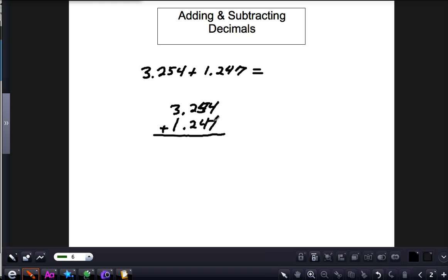Then you add the place values together: seven, eight, nine, ten, eleven. Five and five is ten. So the answer is 4.501. That's for adding. Same thing goes with subtracting. If we